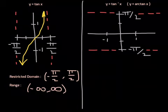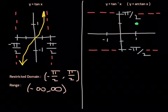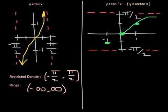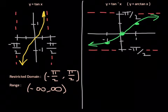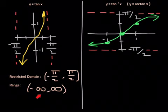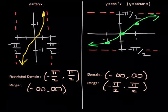For y equals inverse tangent of x, or arctangent of x: because tangent of x has vertical asymptotes at negative pi over 2 and positive pi over 2, arctangent of x will have horizontal asymptotes at negative pi over 2 and positive pi over 2. The origin is (0, 0). The point (pi over 4, 1) on tangent becomes (1, pi over 4) on arctangent, and (negative pi over 4, negative 1) becomes (negative 1, negative pi over 4). The curve then approaches those horizontal asymptotes. The domain and range for arctangent come from the restricted domain and range of tangent of x.